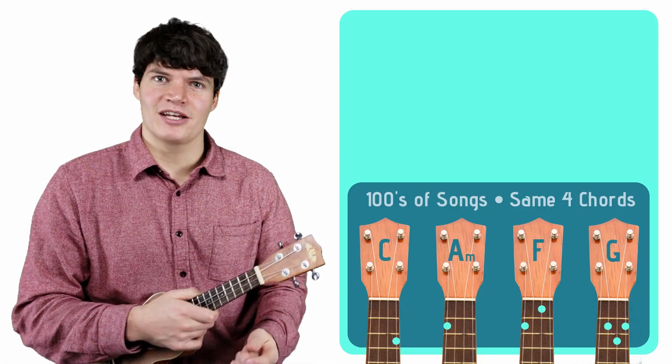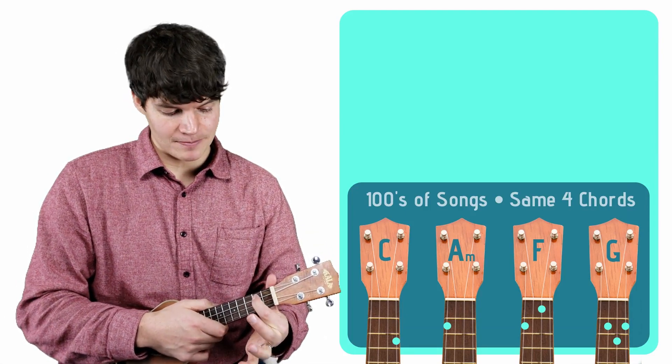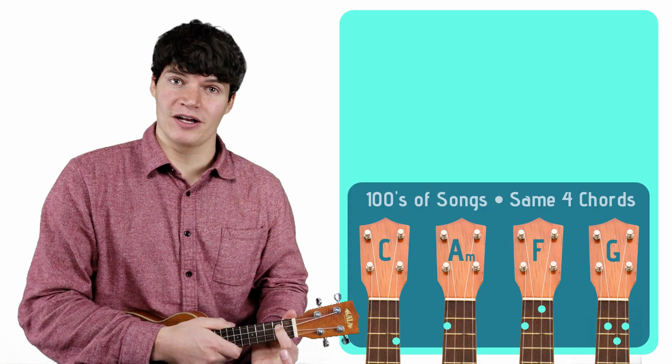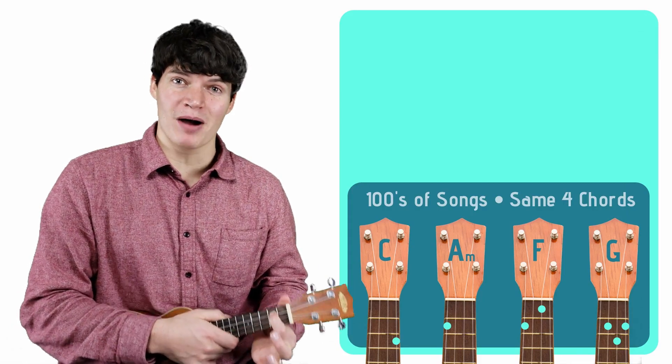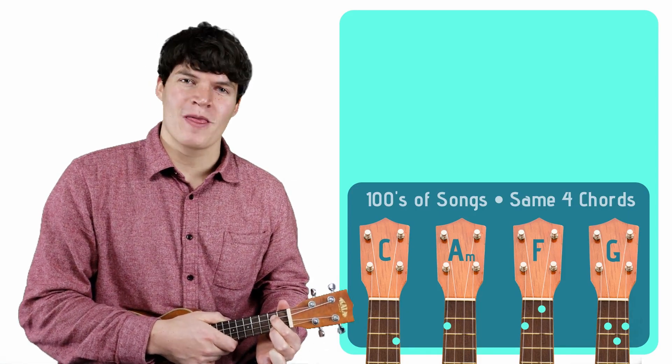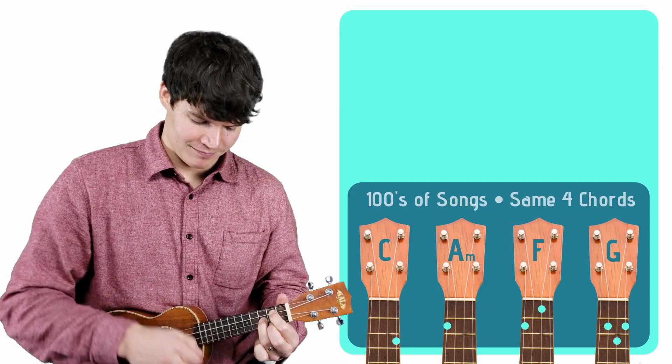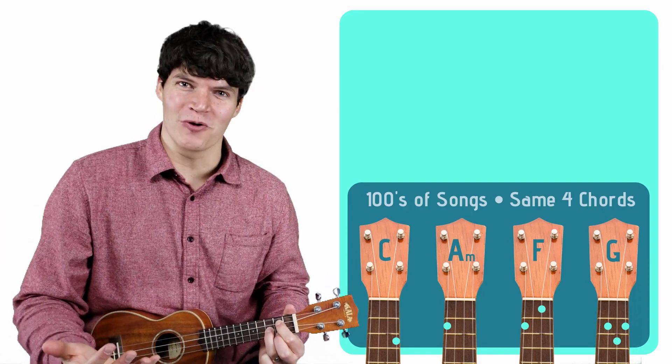So for this one, you're going to take your index finger, place it on the second fret of the second to top string. You're going to take your middle finger, place it on the second fret of the bottom string. You're going to take your ring finger and place it on the third fret of the second to bottom string. There you have it. There's the G chord.